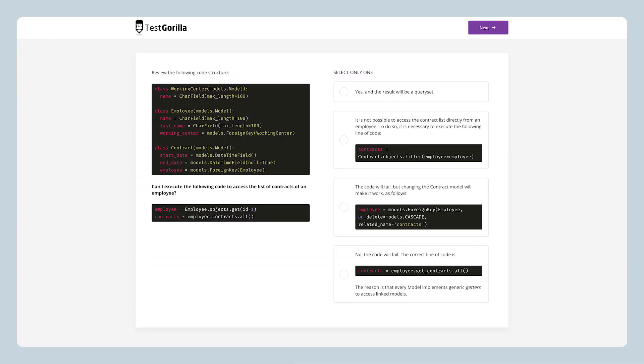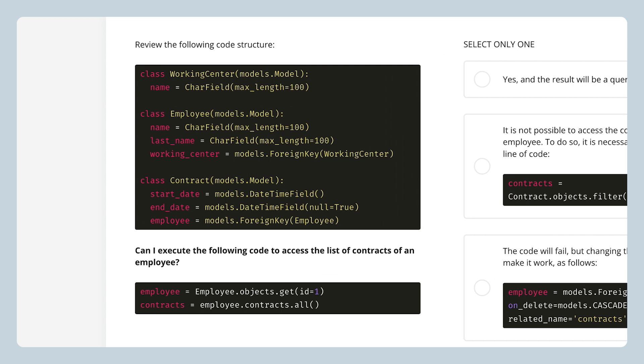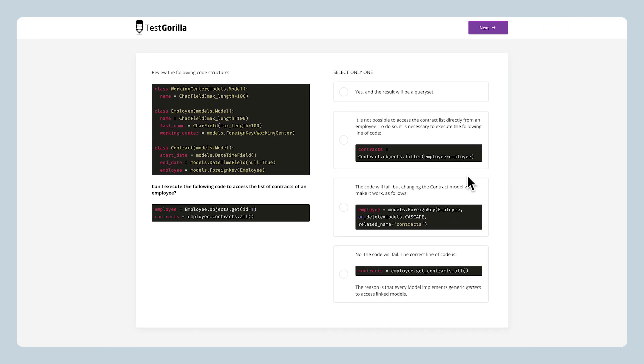So, how exactly do we test for all these technical skills? Well, let's check out some sample questions and find out. The first sample question has a lot going on. Candidates have to review a code structure and then answer a question about executing that code. This first question should give you a good idea of just how technical this test will get.